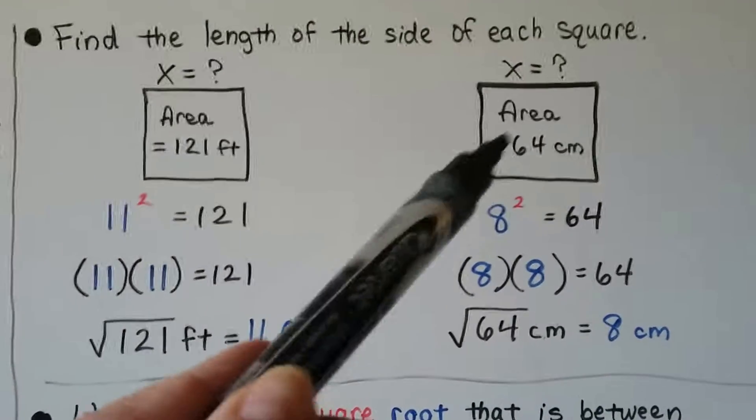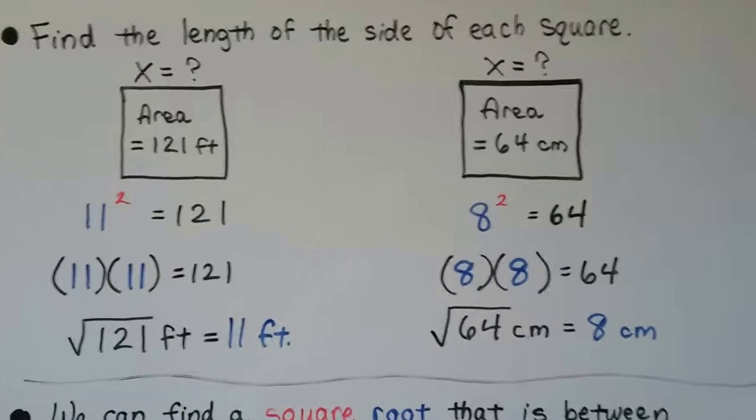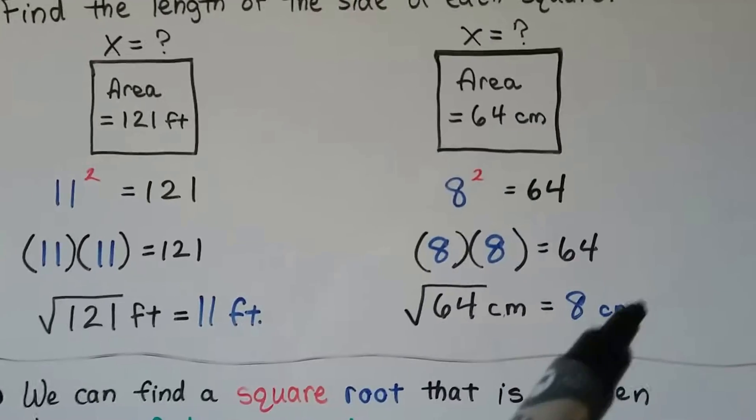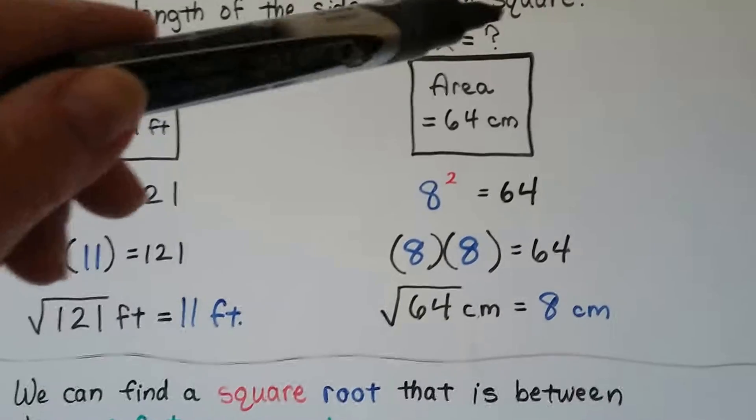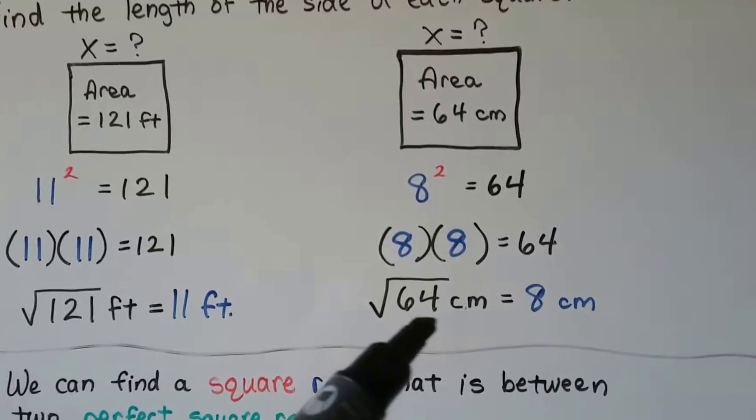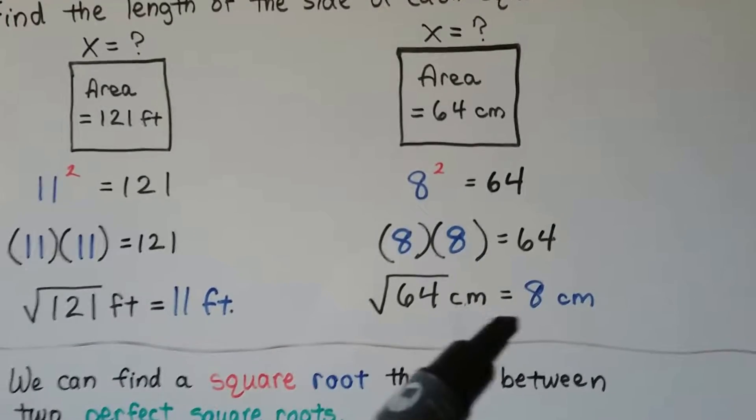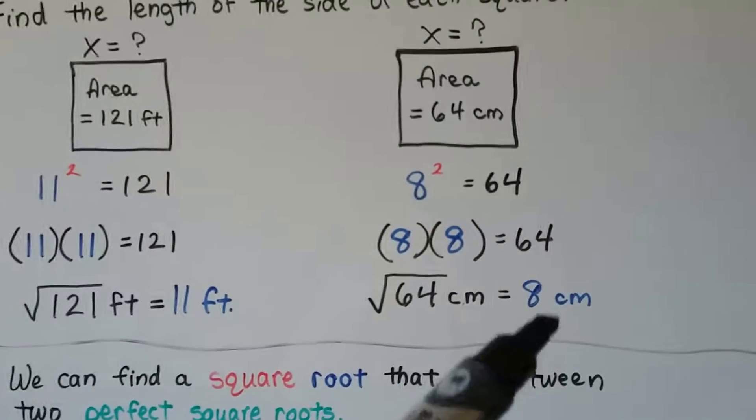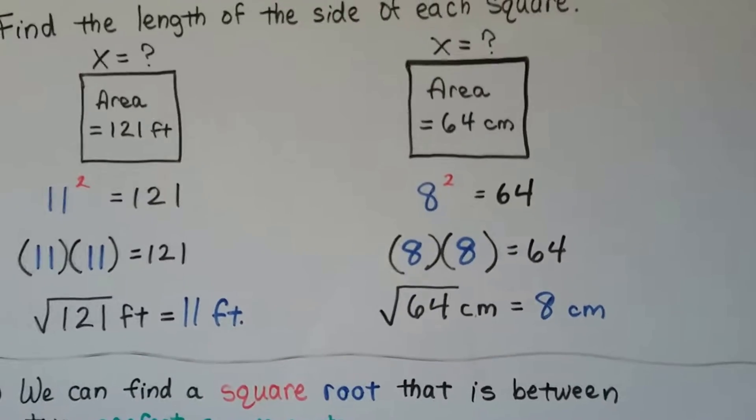The area of this one is 64 centimeters. Make sure you put your labels. Feet, centimeters. So, what does x equal? 8 times 8 is 64. So, the square root is going to be 8. So, x equals 8 centimeters.